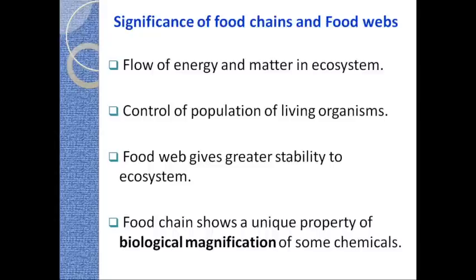To summarize, the significance of food chains and food webs is as follows: they help in the flow of energy and matter in the ecosystem; they help in control of population of living organisms because all animals are feeding on other animals, directly or indirectly controlling population and maintaining balance in the ecosystem; food webs give greater stability to ecosystems as we just saw. Food chains also show a unique property called biological magnification of some chemicals. Suppose any chemical or pesticide is introduced to any particular ecosystem — it could come by flowing water from an outside area.